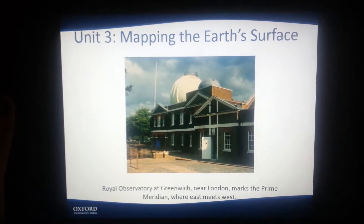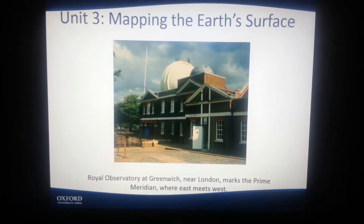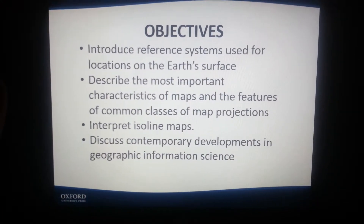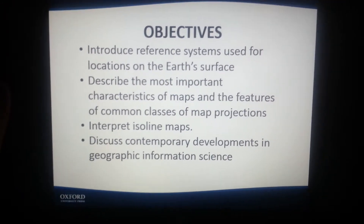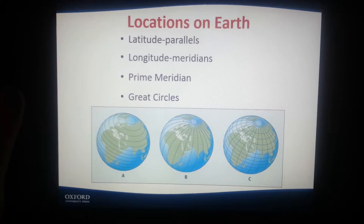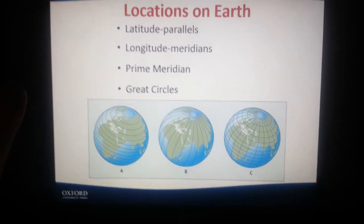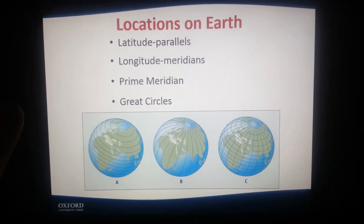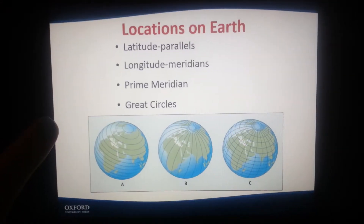Here we have Unit 3: Mapping the Earth's Surface. There is an image of the Royal Observatory at Greenwich near London, which marks the Prime Meridian where east meets west. The objectives include: introduce reference systems used for locations on the Earth's surface, describe characteristics of maps and map projections, interpret isoline maps, and discuss contemporary developments in geographic information science. Topics include latitude, parallels, longitude, meridians, and the Prime Meridian. The Great Circles are the meridians, and the small circles are the parallels — the only parallel that is also a Great Circle is the equator.